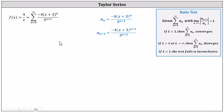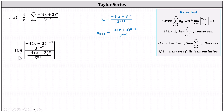To determine the radius of convergence, we'll apply the ratio test, which indicates we'll determine the limit as n approaches infinity of the absolute value of a sub n plus one divided by a sub n, which must be less than one in order for the series to converge. a sub n is the given formula, and a sub n plus one has the exponent on x plus three as n plus one, and the exponent on three as n plus one plus one, or n plus two. Now let's set up the limit as the absolute value of a sub n plus one divided by a sub n, writing this quotient as a product by multiplying by the reciprocal of a sub n.